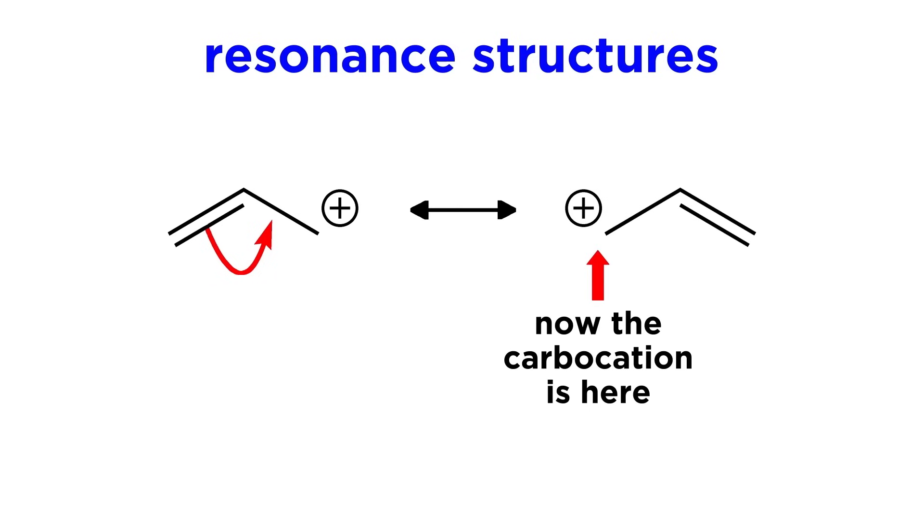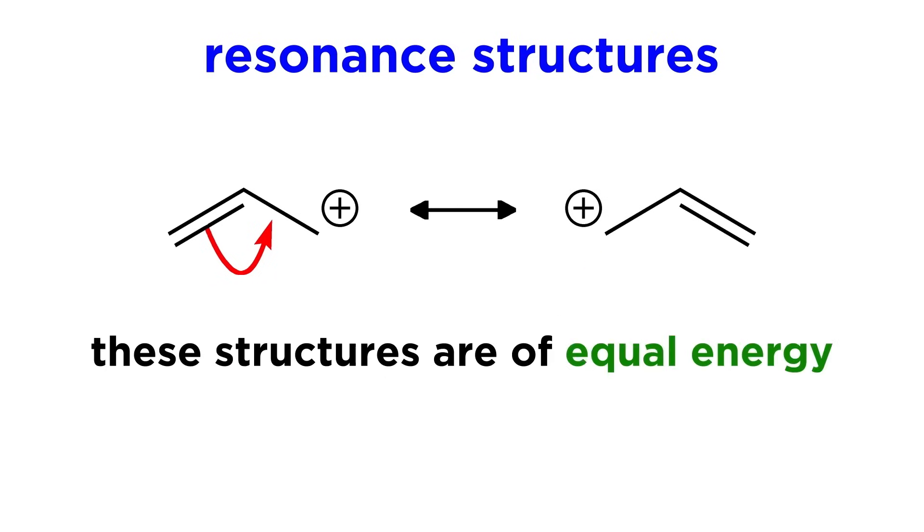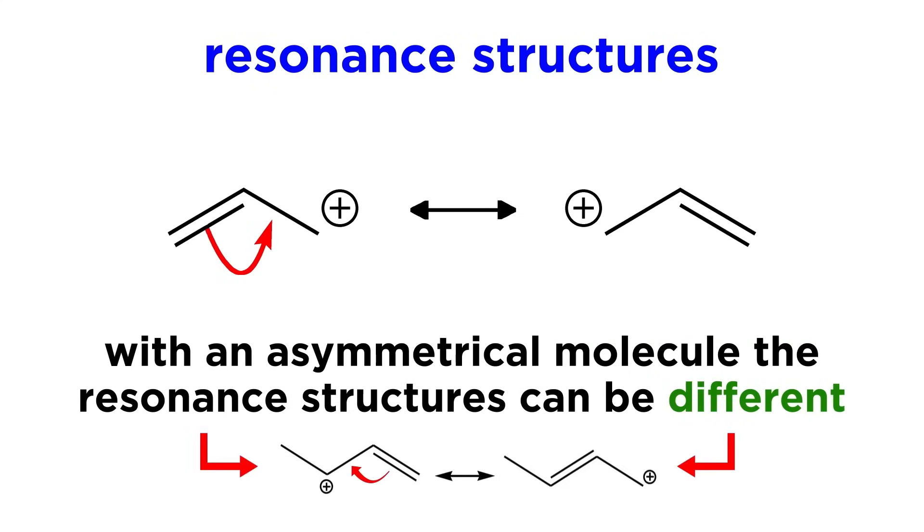Of course, this will leave a new carbocation on this other carbon, so these resonant structures are of equal energy. In this case they are also identical structurally, but if we made the molecule asymmetrical, they would be structurally different as well.